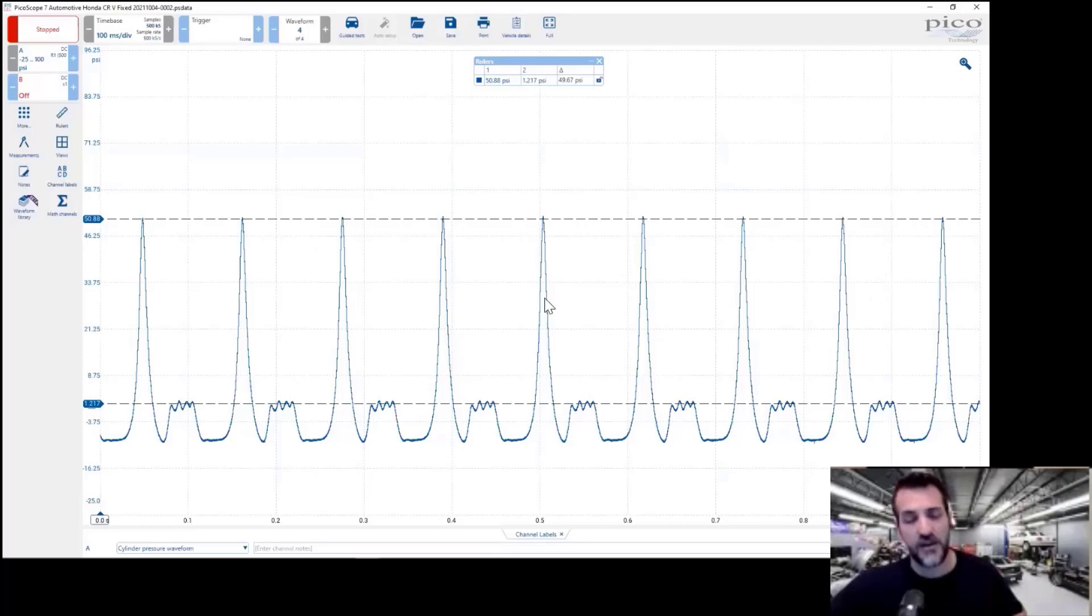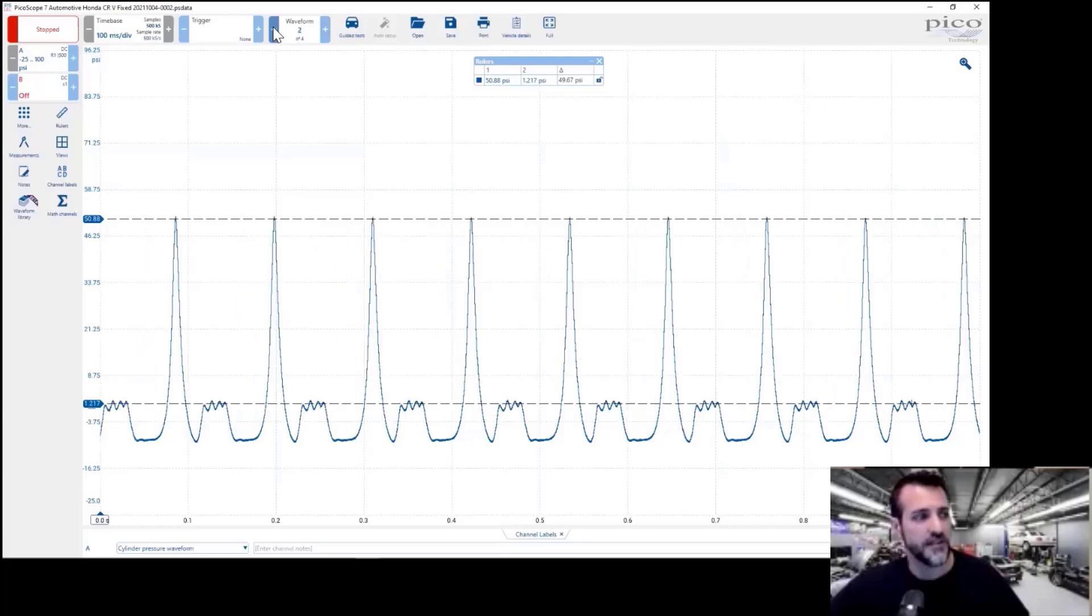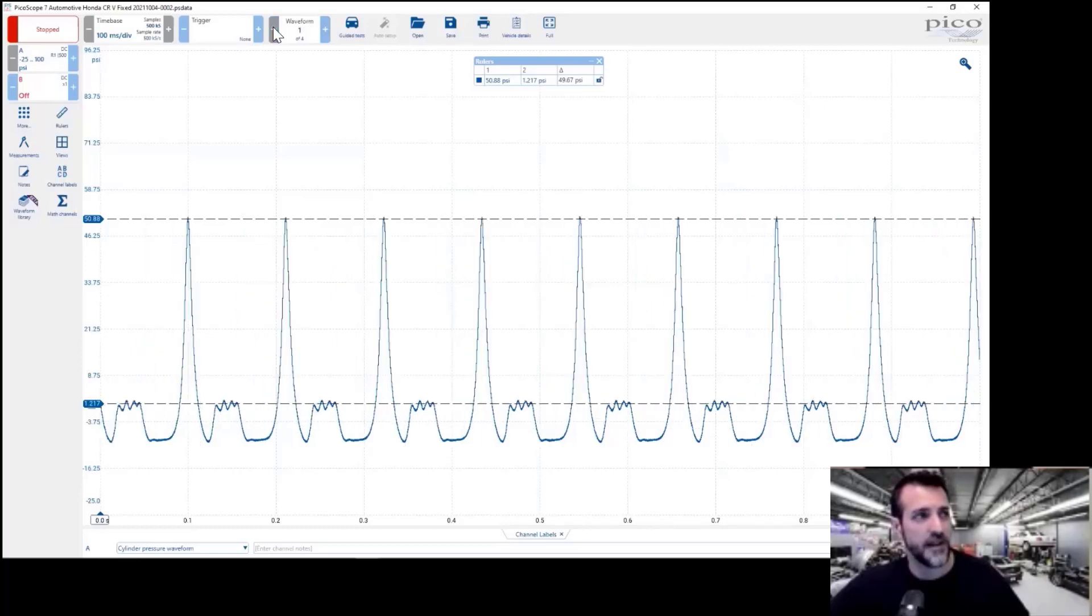So this engine can now exhale and because it can exhale, it can now get the fresh air and fuel in. His volumetric efficiency has returned. And as a result, the engine performs as it should. So this is buffer number four, waveform number four in a buffer. I'm going to go back one more. There's three, there's two, and there's one.